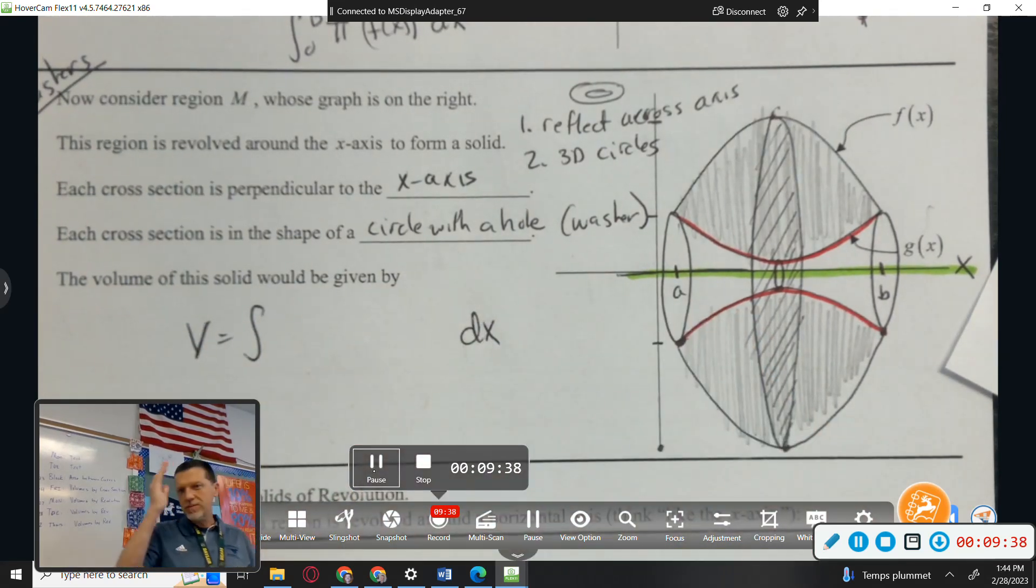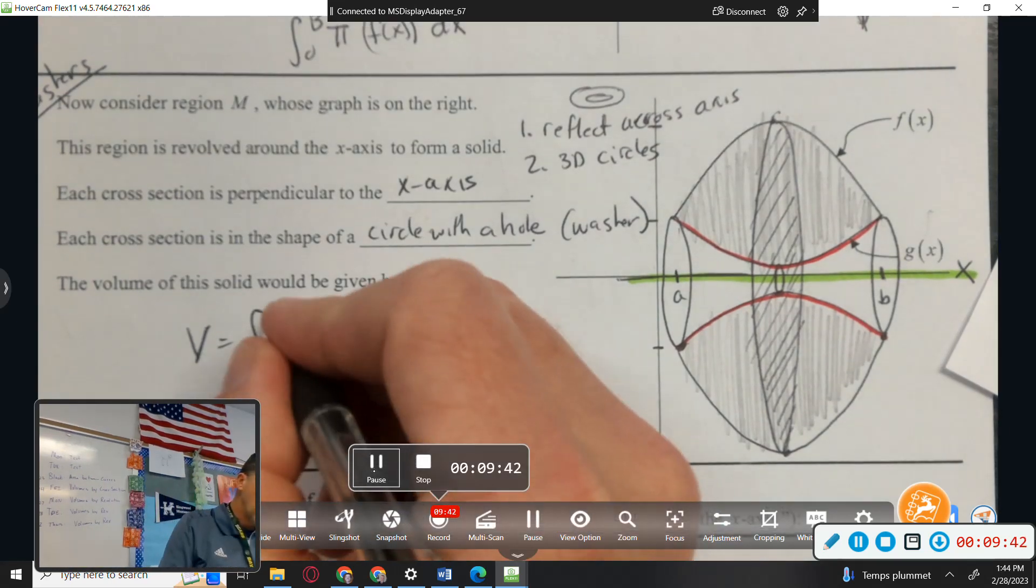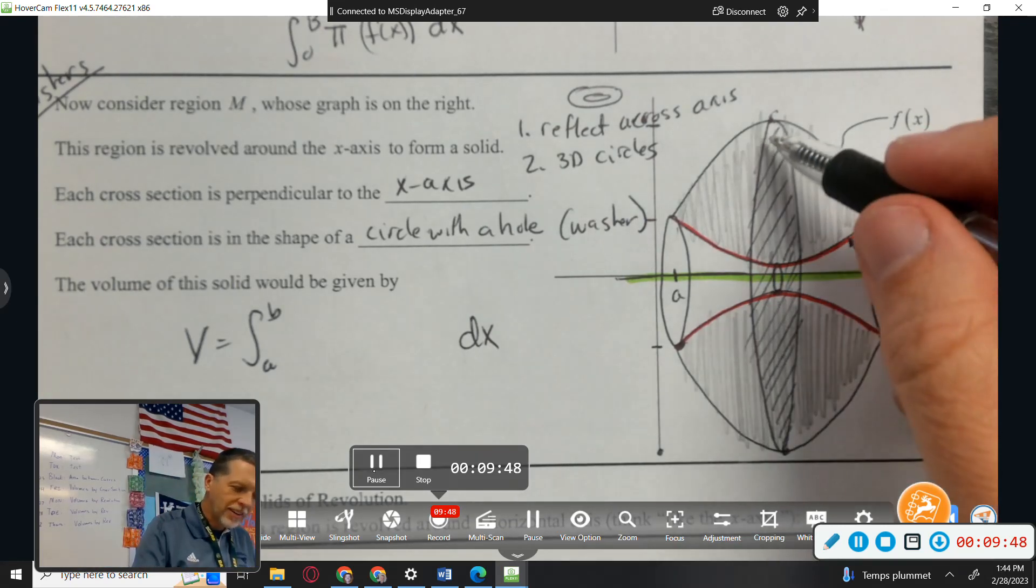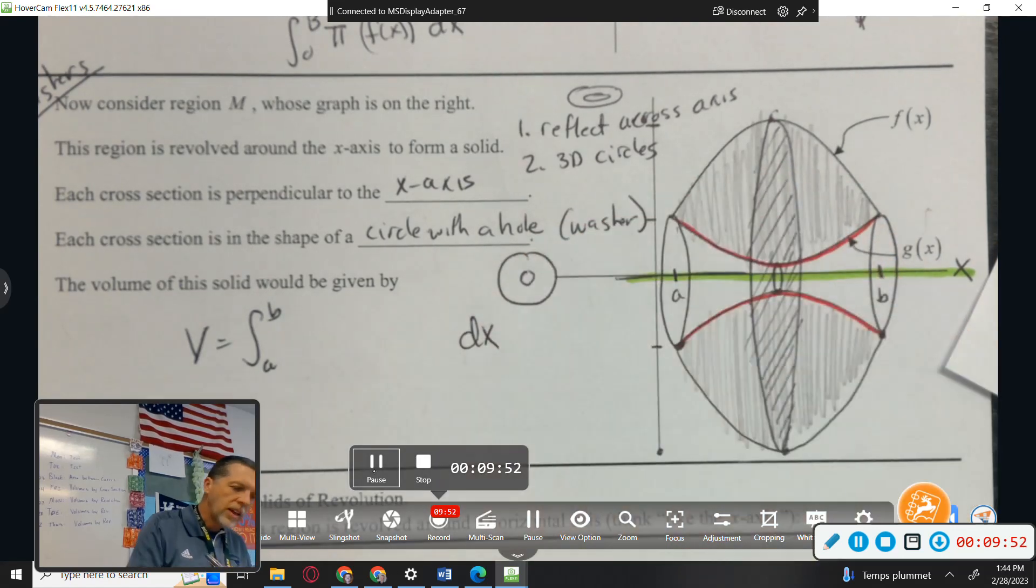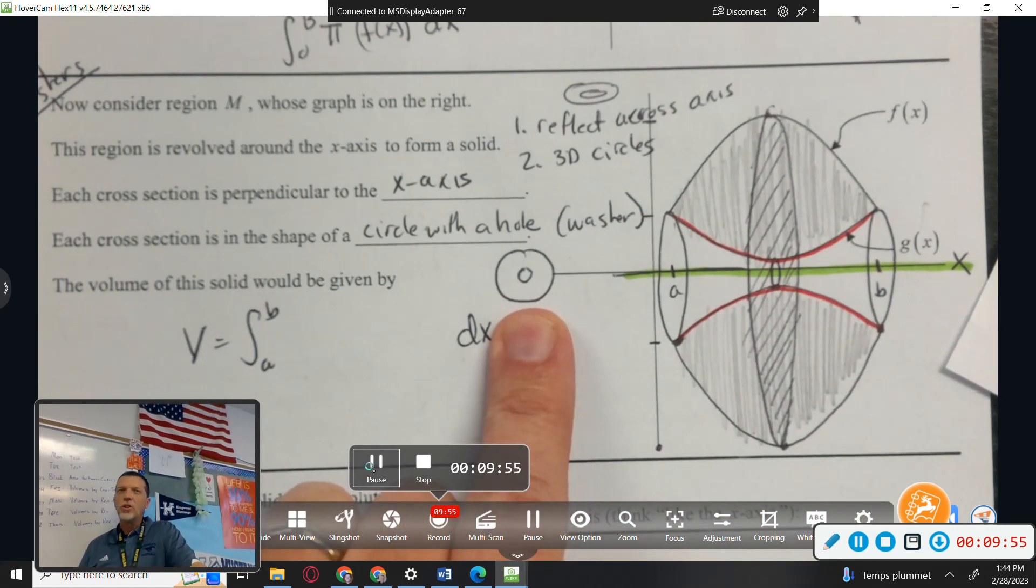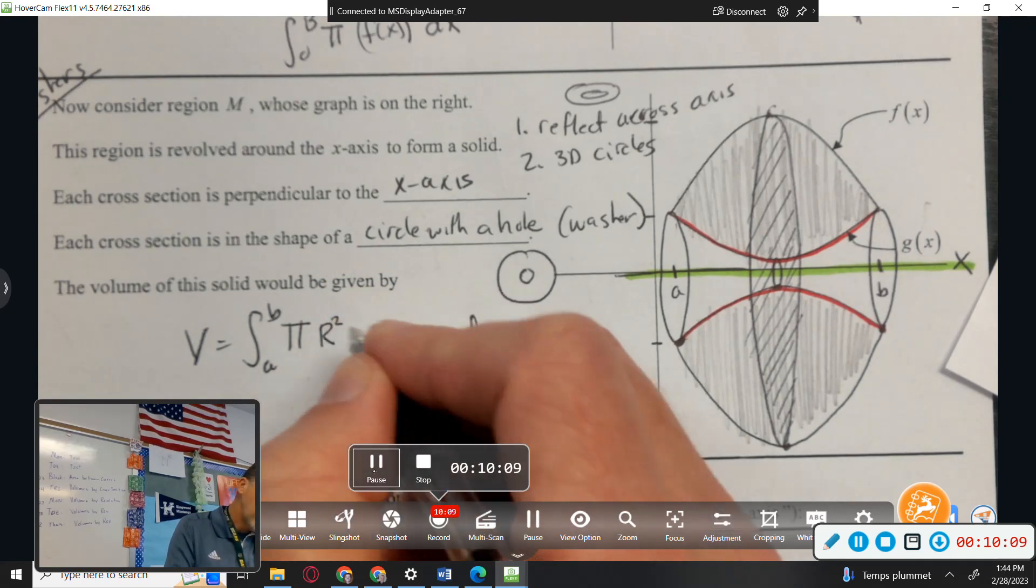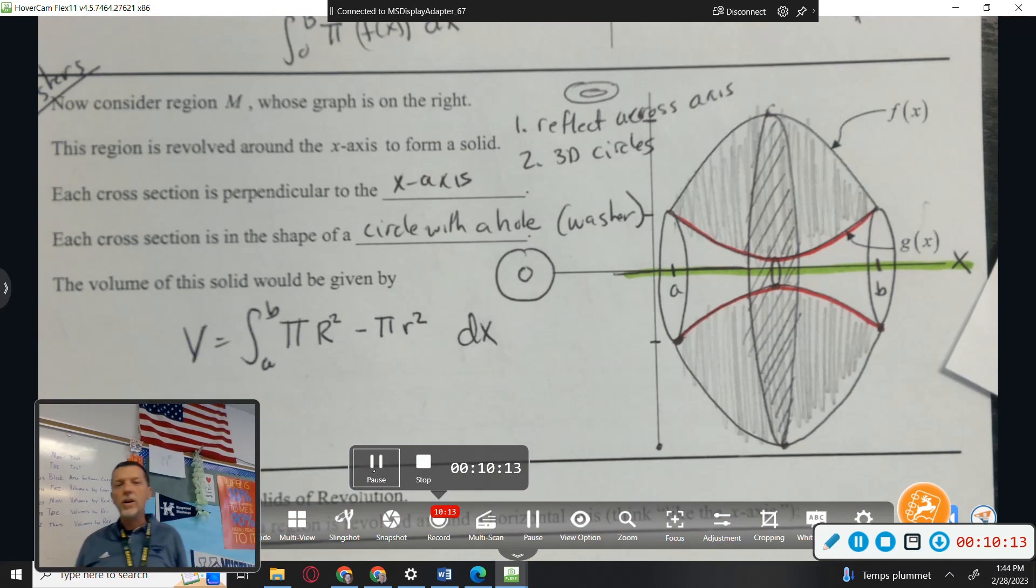The volume of this solid would be integral from A to B. They're all dx, stacked up in the x direction. But I need to do, like each cross section is a circle with a circle missing. If I take a cross section, it's a circle with a circle missing. What I did was I separated them into two radii, like pi R1 squared minus pi R2 squared. That's exactly what we do. Pi R squared minus pi r squared.